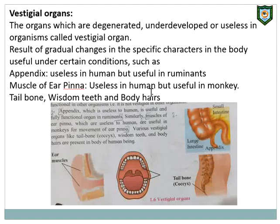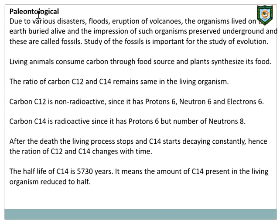These examples tell us we have evolved from our ancestors. The advancement in the form of these organs is called evolution. Through vestigial organs, we can say that we have evolved from our old ancestors.